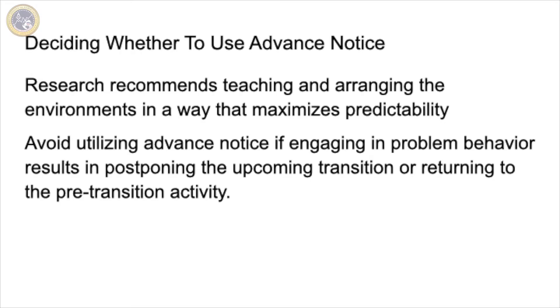Of the studies reporting problem behavior when advanced notice was provided as a treatment, the behavior was controlled by variables unrelated to unpredictable aspects of transition. Therefore, the important question to ask is when deciding whether or not to use advanced notice as a treatment option. The authors provide a decision tree to determine the most effective treatment when addressing transition-related problem behavior, as well as questions to ask when moving through the decision tree. As a best practice approach, the authors recommend teaching and arranging the environment in a way that maximizes predictability, and not to utilize advanced warning if engaging in problem behavior results in postponing the upcoming transition or returning to the pre-transition activity.